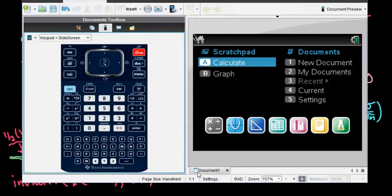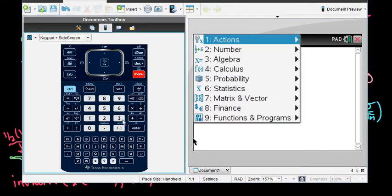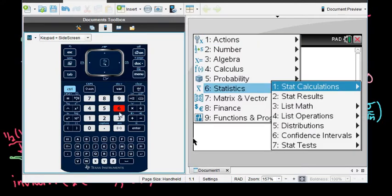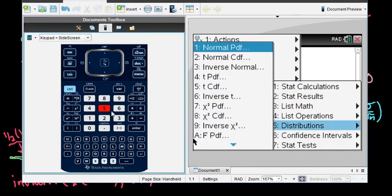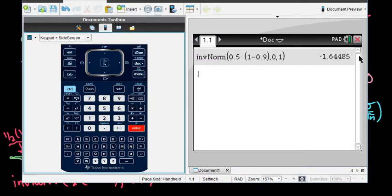And so let me pull up my calculator. I'm just going to open up a calculator screen. And to do this, remember that we would go to our stats, the menu, statistics, and distributions. And option three is our inverse norm. And I can actually just type in here 0.5, parentheses, 1, minus 0.9. That way it'll automatically do the math for me. I could have also found the math, but that's just the shortcut.